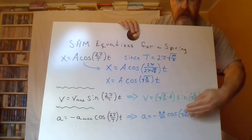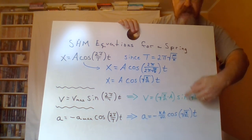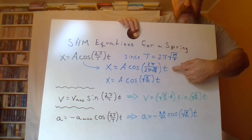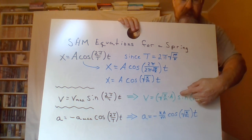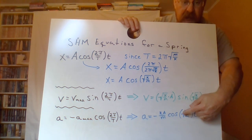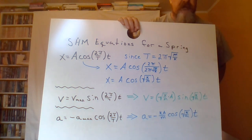We can do that same substitution for velocity — if I want to know the velocity at any moment in time during the vibration — and similarly for the acceleration the spring is exerting on the mass at any moment in time. That is how we apply the simple harmonic motion equations to the spring, making our substitution to determine the location, speed, and acceleration of the mass at any time during the motion.